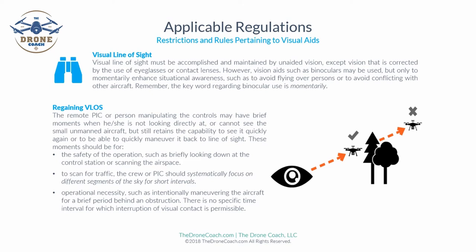Vision aids such as binoculars may be used, but only to momentarily enhance situational awareness — such as to avoid flying over persons or to avoid conflicting with other aircraft. Remember the key word: 'momentarily.' There may be trick questions on your FAA exam about this. A brief moment when the remote pilot or person manipulating controls cannot see the aircraft but retains the capability to see it again quickly or maneuver it back into line of sight is permissible, but only briefly.